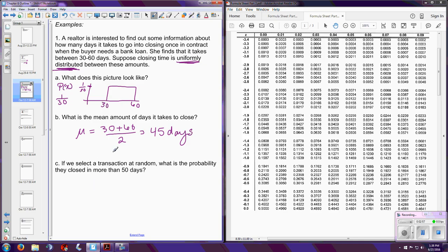What is the mean amount of days it takes to close? Well, we said that that was the low plus the high. So we have 30 plus 60 divided by 2, which gives us 45. So the mean closing time is 45 days in this situation.